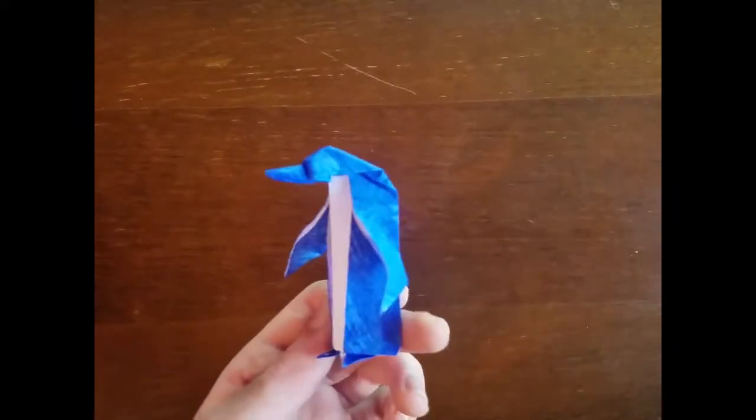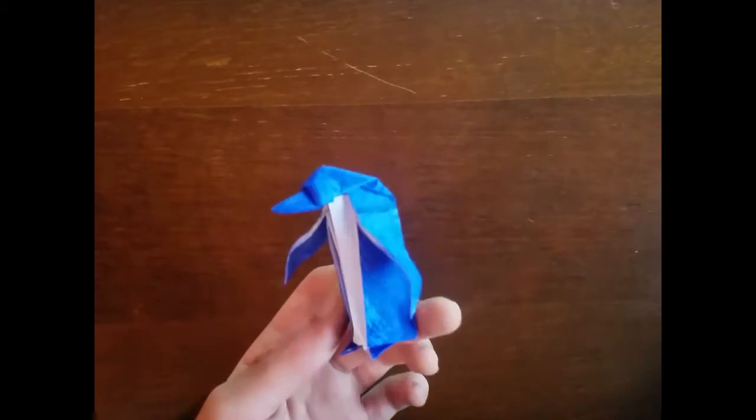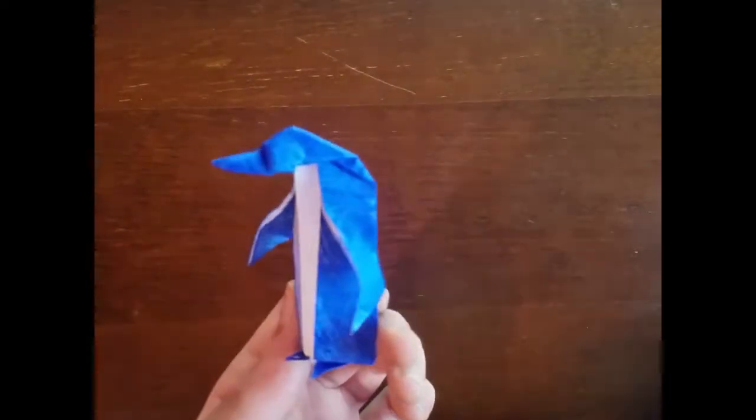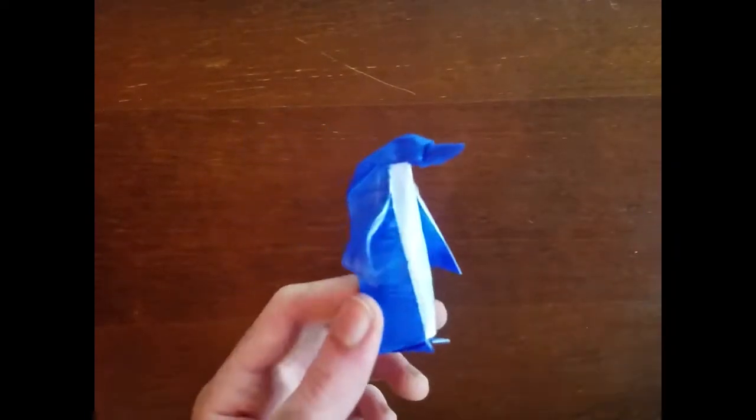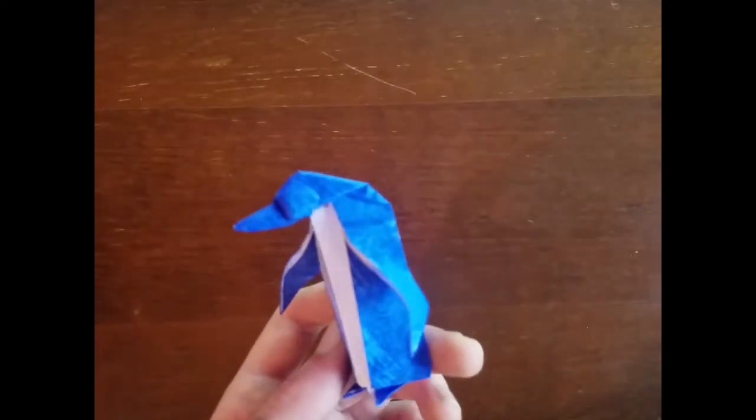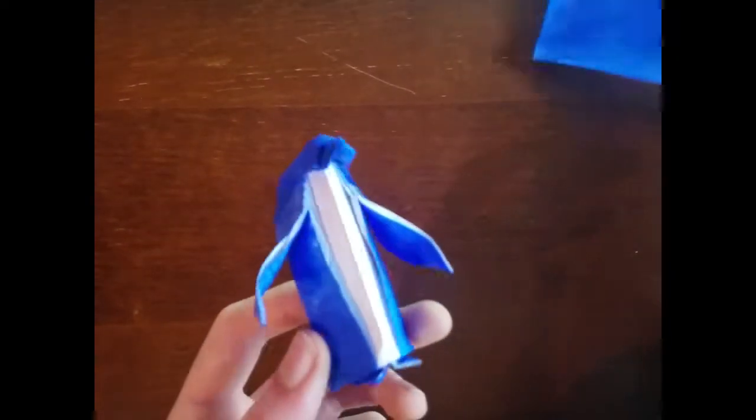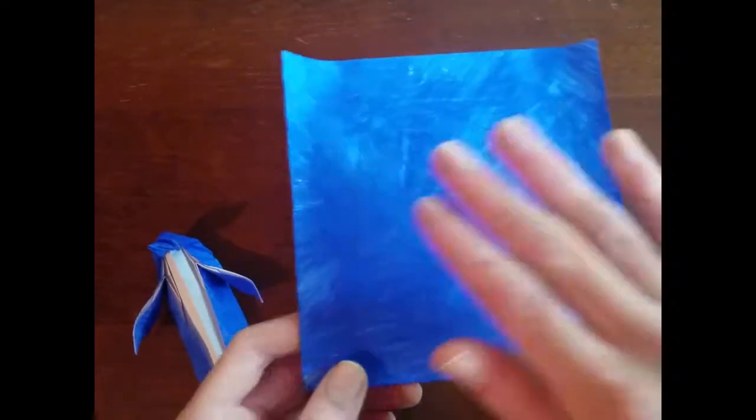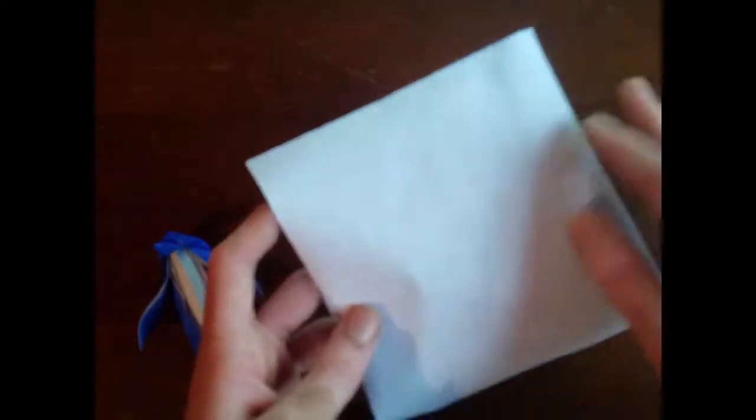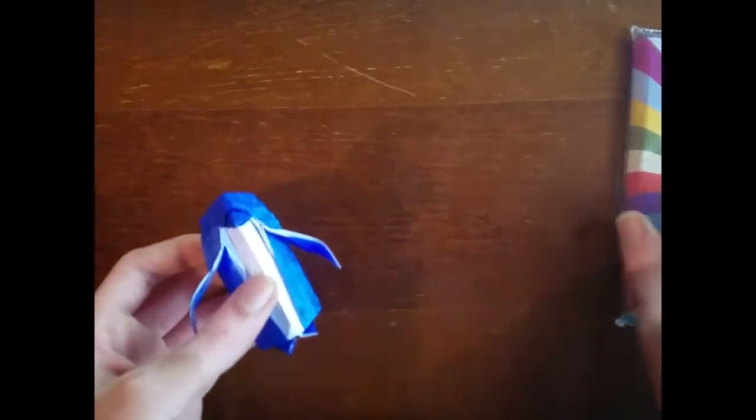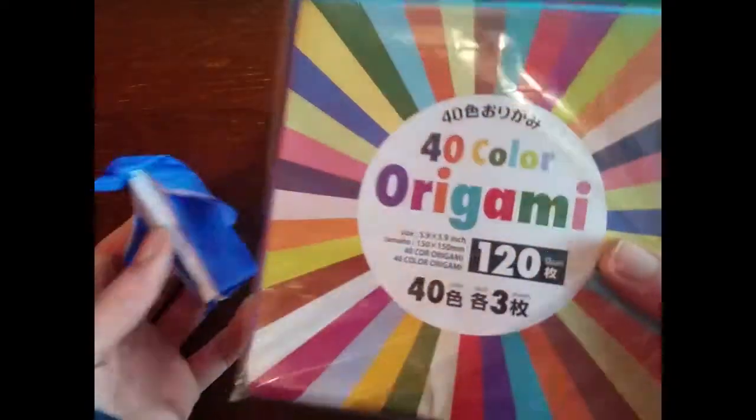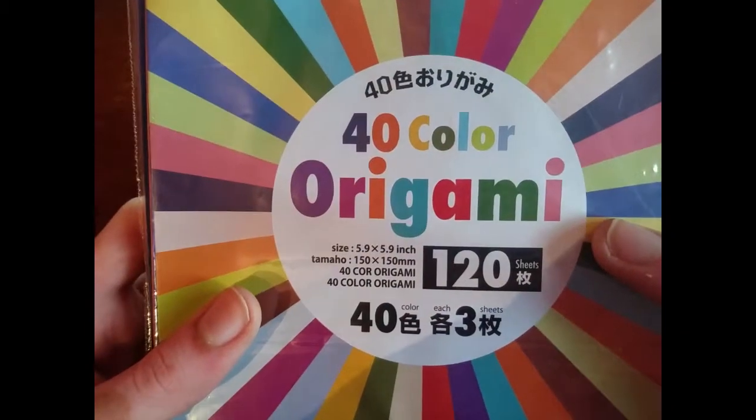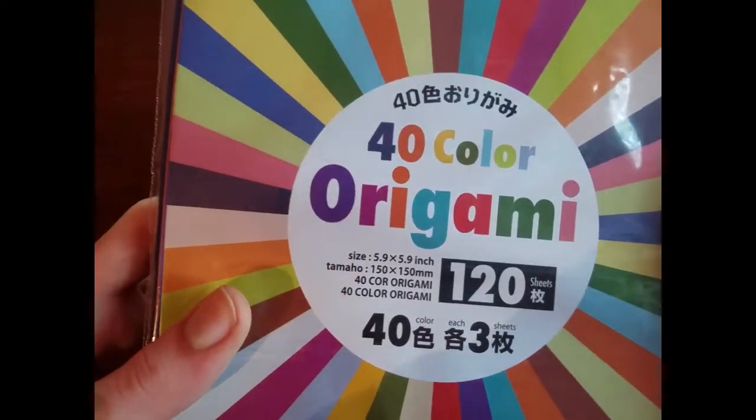This was folded from a 5.5 by 5.5 inch square printer paper. I painted one side blue and left the other side white, but any paper will work. In the video, I'm going to be using this standard origami paper, and this one is 5.9 by 5.9 inch, or 15 by 15 centimeters.